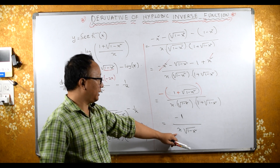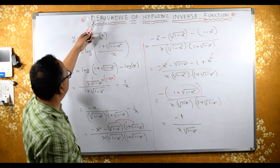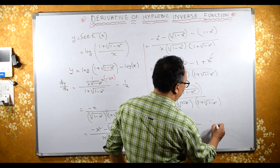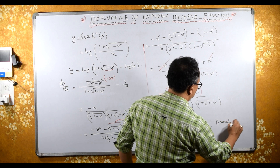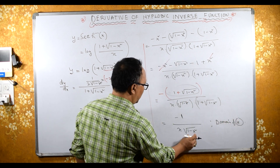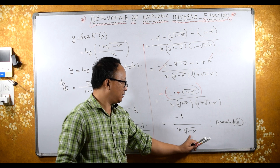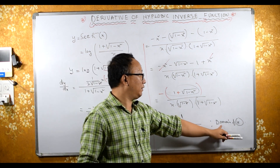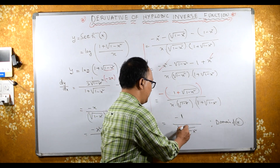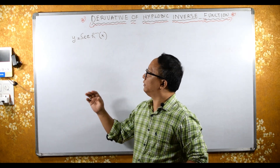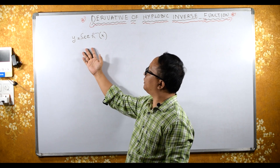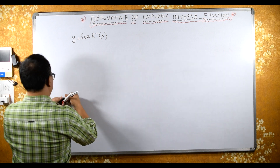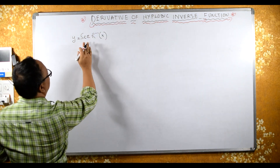Be careful about the domain of x, because inside the log we have 1 minus x², and if it is negative there will be a problem. We need to be careful about the domain of x. Now let's find another way to differentiate sech⁻¹(x) — this method is shorter and simpler.